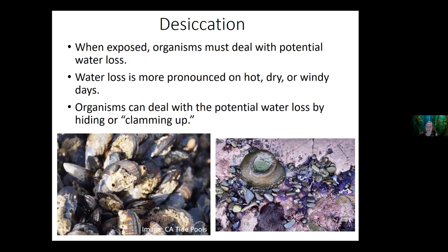The first challenge is desiccation. When the tide goes out organisms have to deal with drying out, and if it's a hot, dry, or windy day that desiccation is more pronounced. One way many organisms deal with this is by clamming up — the organism can close up its body so it's not as exposed. In the bottom left picture you can see mussels that have closed up while exposed to air. In the bottom right, a giant green anemone has closed up its body and pulled in its tentacles, which also helps it keep from drying out.